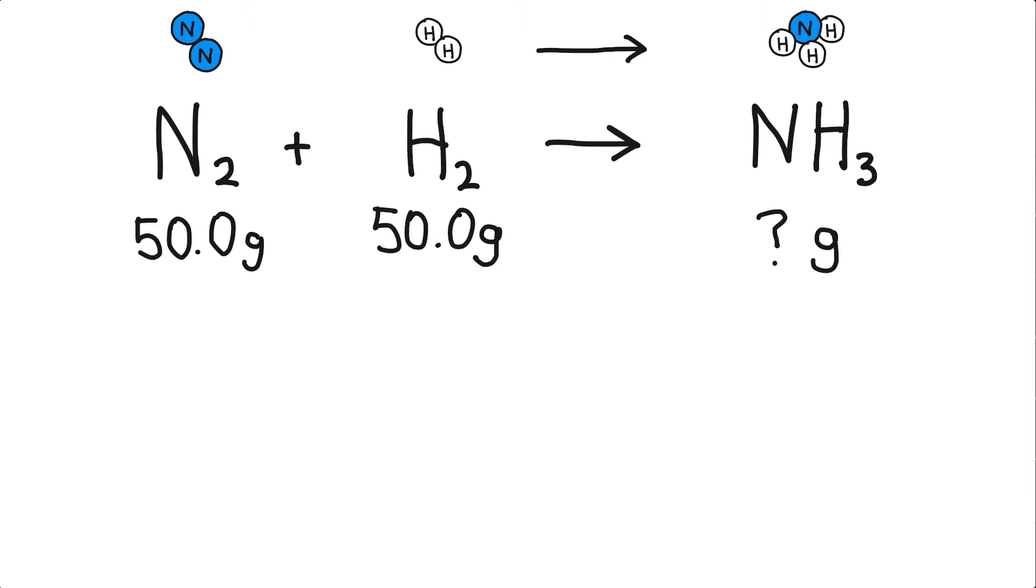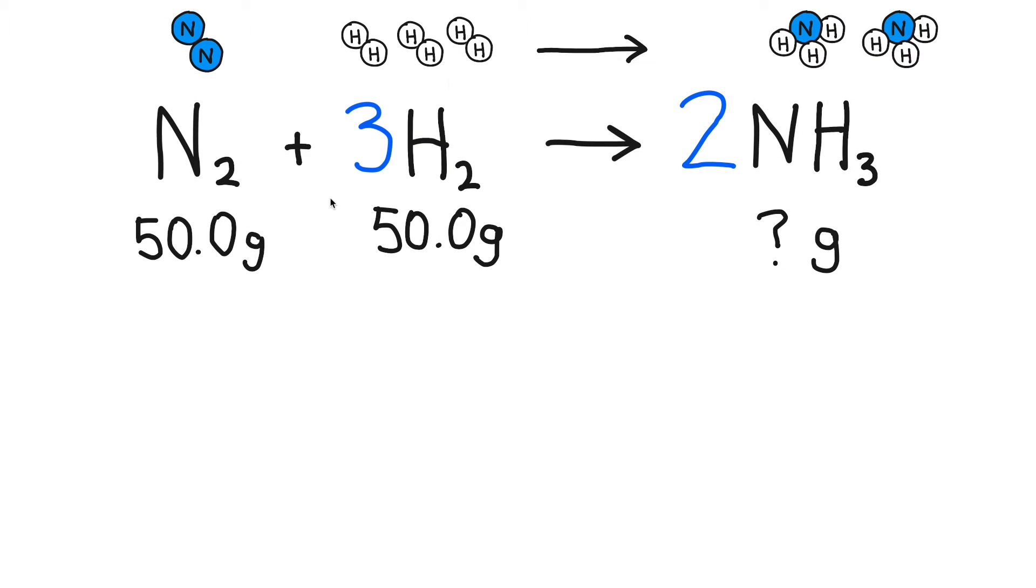A typical stoichiometry problem will provide you with some sort of chemical equation and starting quantities of the reactants. Most often you have to predict how many grams of product will be made. Just a hint here, the answer is not 100 grams. The BCA chart will help us organize our thinking and understand why 100 grams of product is not produced. Again, the first thing that you need to be able to do is balance the chemical equation. This equation is not balanced. Now we can see that the equation is balanced. We have two nitrogen atoms in the reactant side of the equation and two nitrogen atoms in the product side of the equation. We have six hydrogen atoms in the reactant side of the equation and six hydrogen atoms in the product side of the equation.